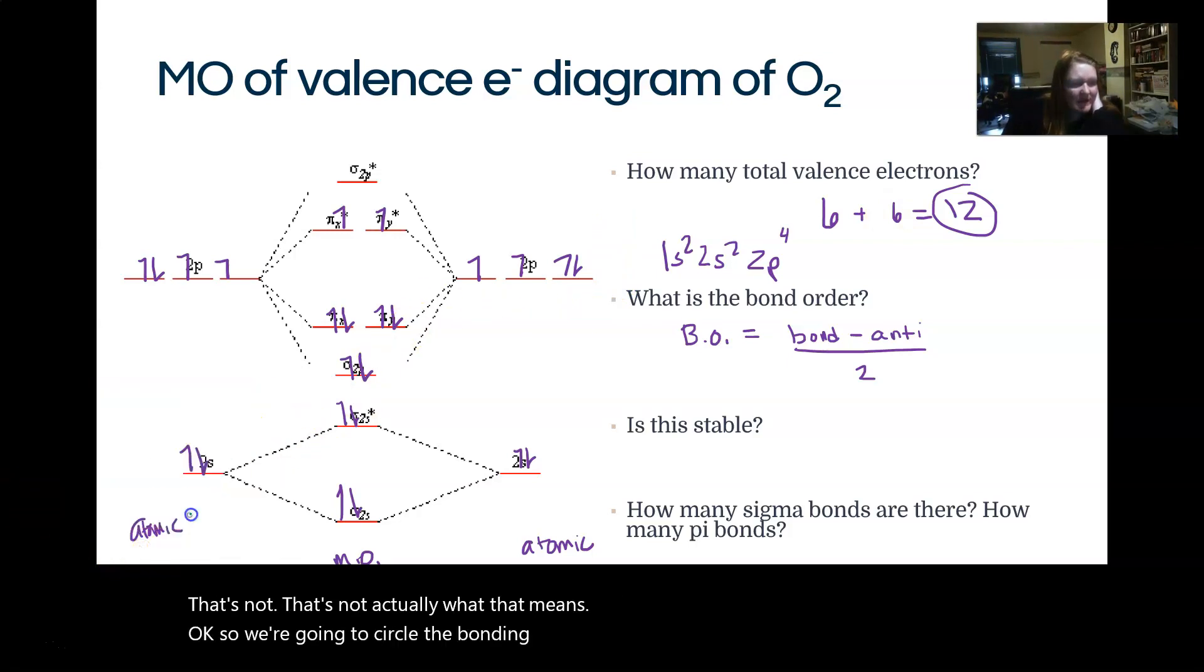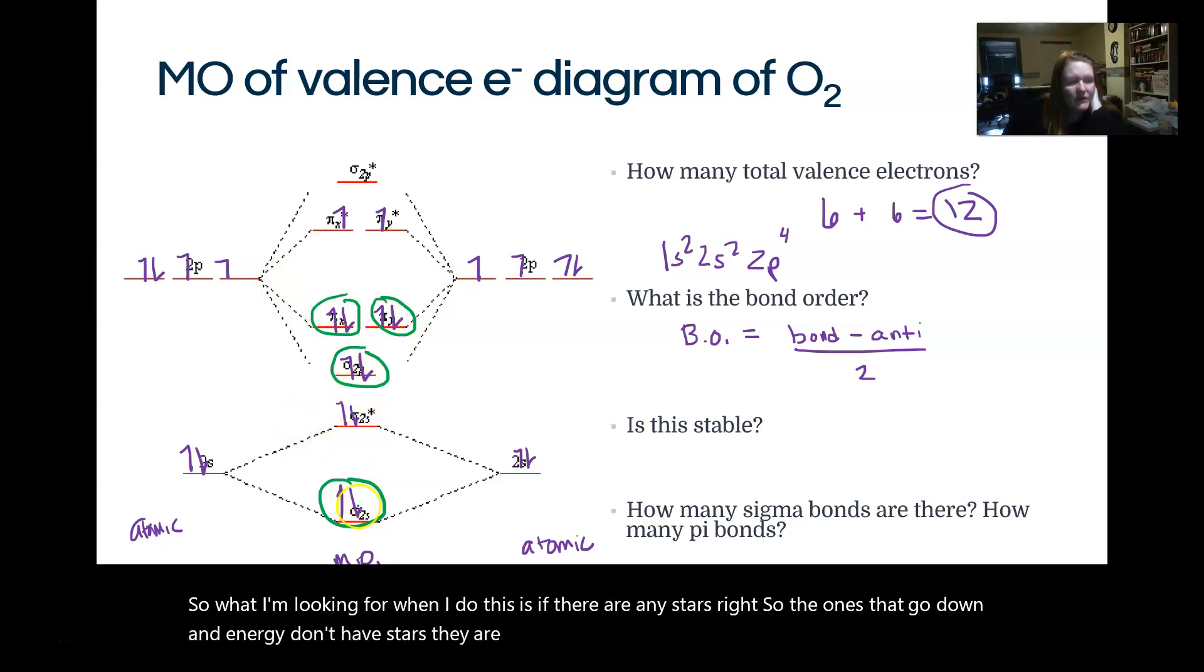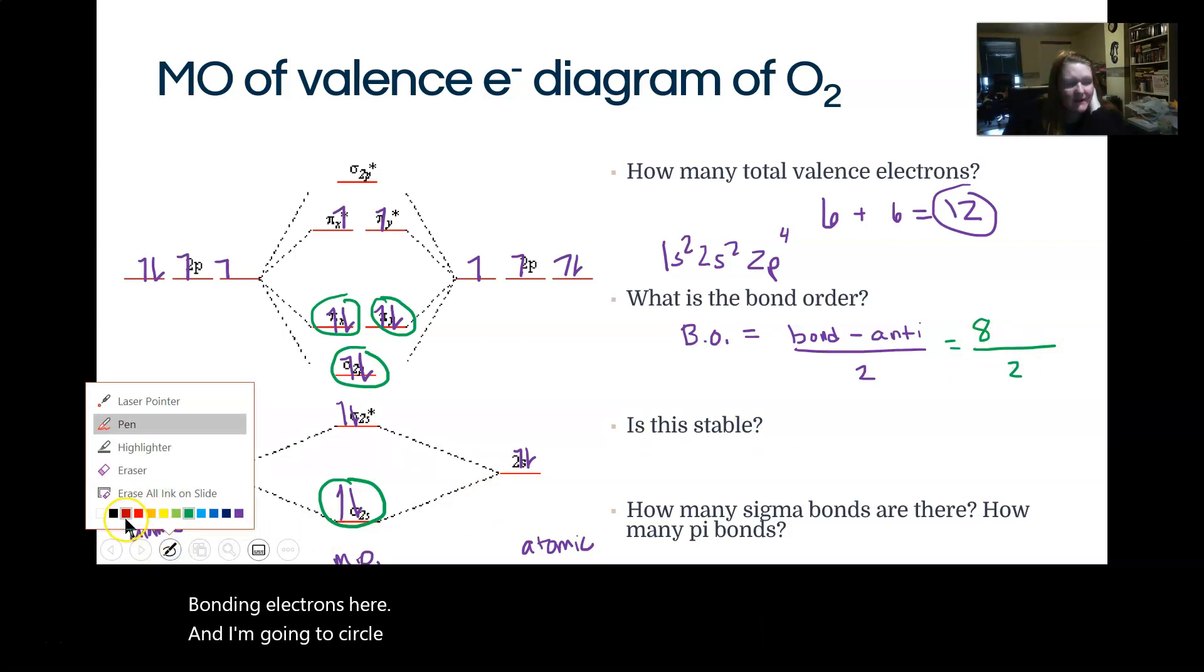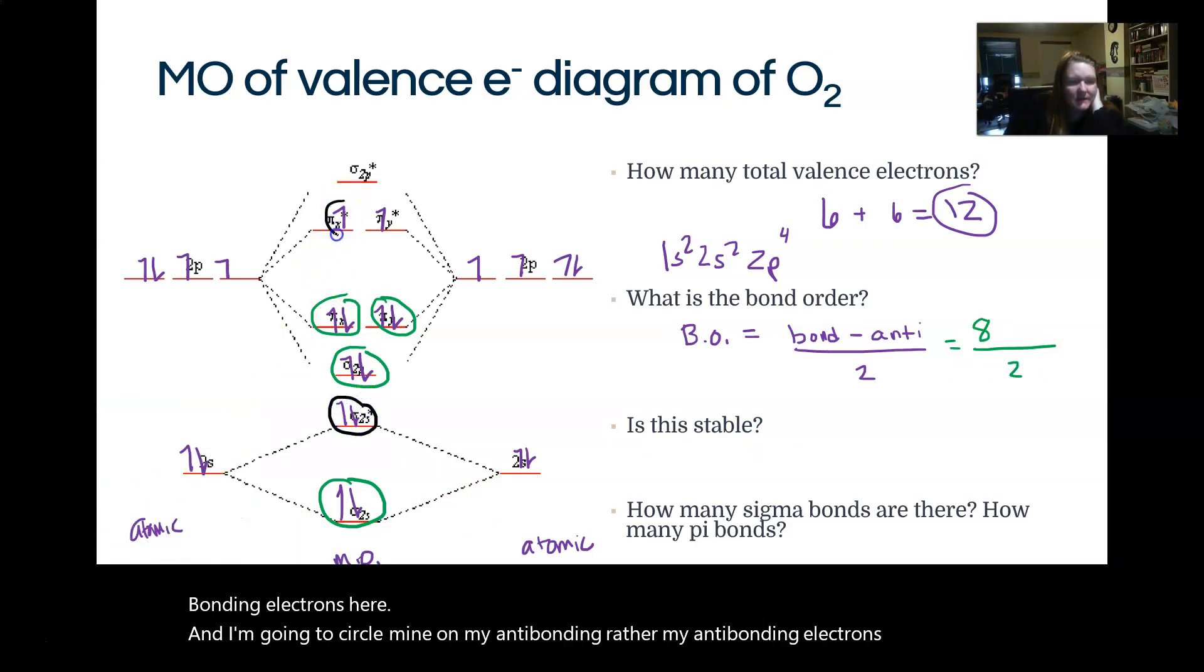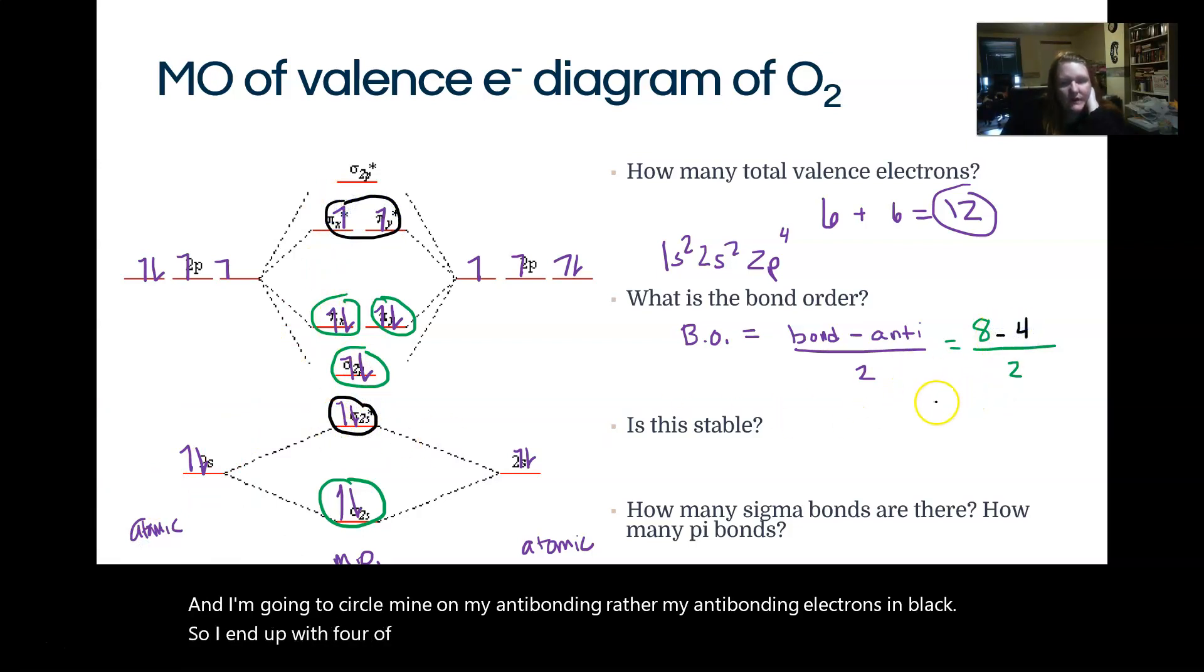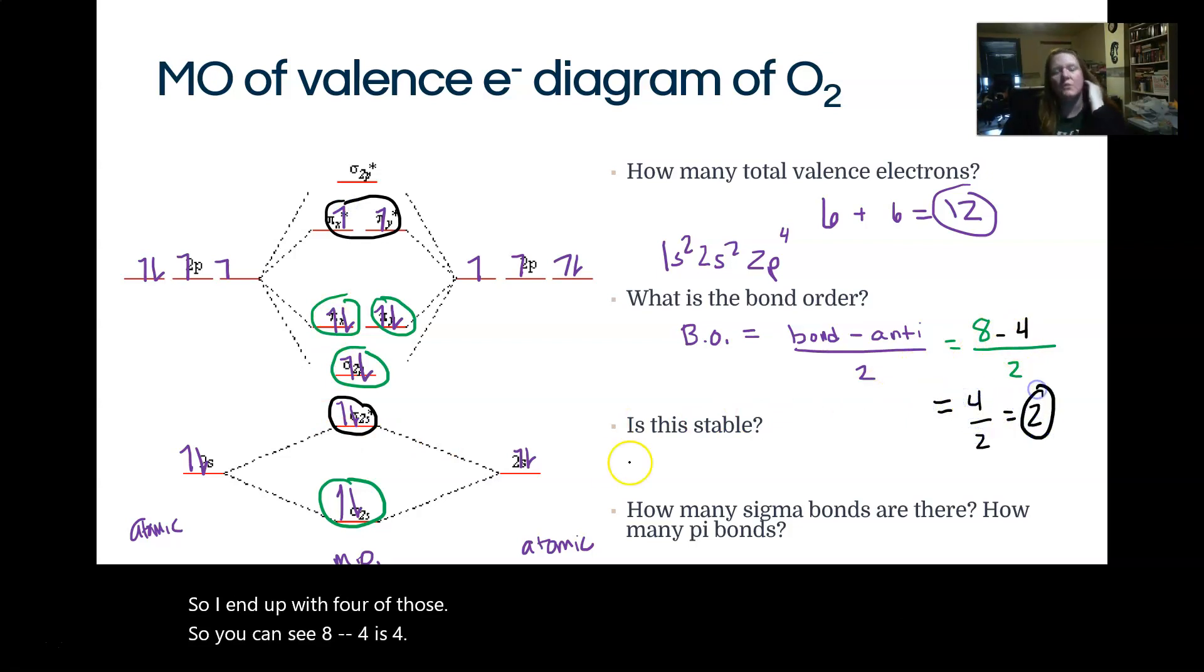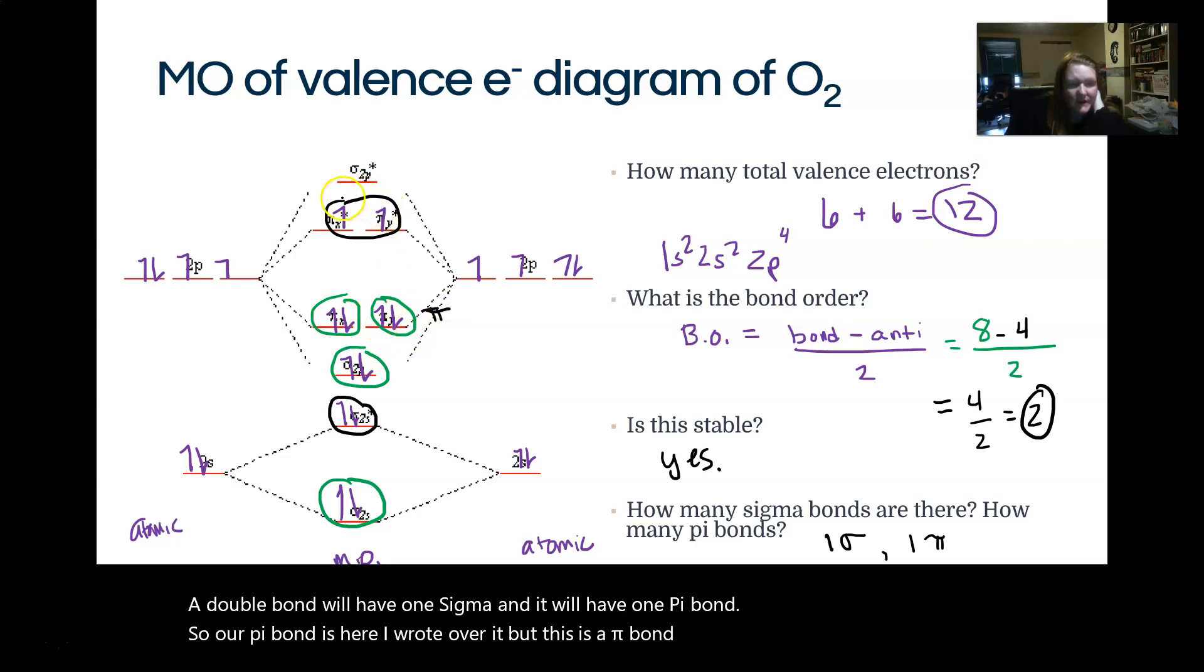So I'm going to circle the bonding orbitals in green. What I'm looking for when I do this is if there are any stars. The ones that go down in energy don't have stars. They are bonding. So I end up with 2, 4, 6, 8 bonding electrons here. And I'm going to circle my antibonding electrons in black. So I end up with 4 of those. So you can see, 8 minus 4 is 4. That in oxygen, we predict a double bond. A double bond will have 1 sigma and it will have 1 pi bond. So our pi bond is here. This is a pi bond because there's two spots. One of these is being cancelled out. But that still leaves 1 pi bond behind and 1 sigma behind that isn't cancelled out. That's what a double bond means.